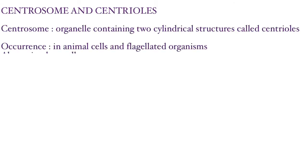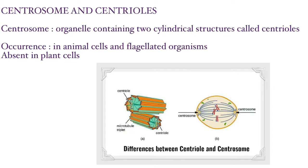The centrosome is an organelle usually containing two cylindrical structures called centrioles, surrounded by amorphous pericentriolar material. The centrioles are sub-microscopic, microtubular, and barrel-shaped. They usually occur as two granules, which is why they are known as diplosomes. They occur in animal cells, flagellated organisms, and in structures like spores and gametes.